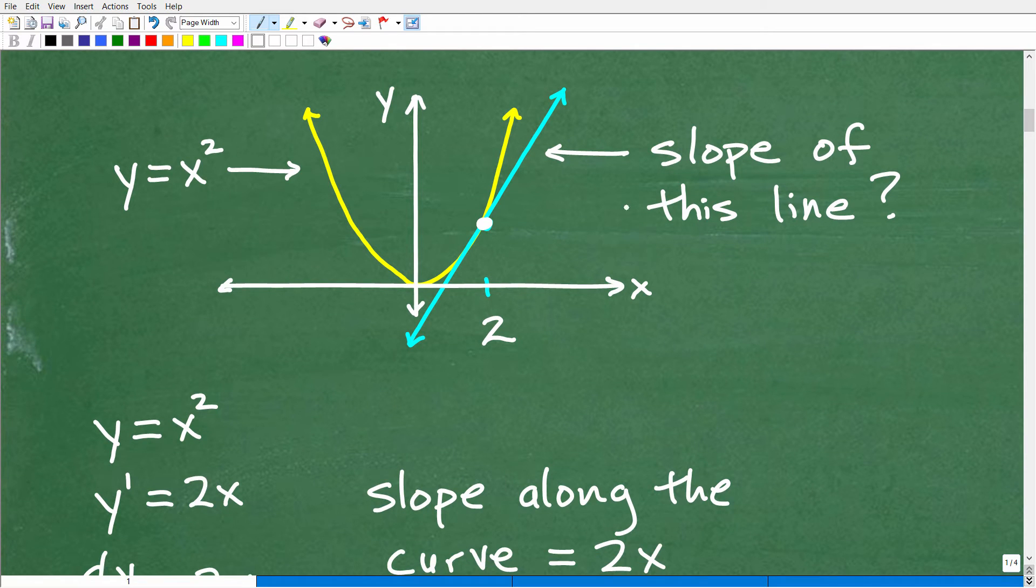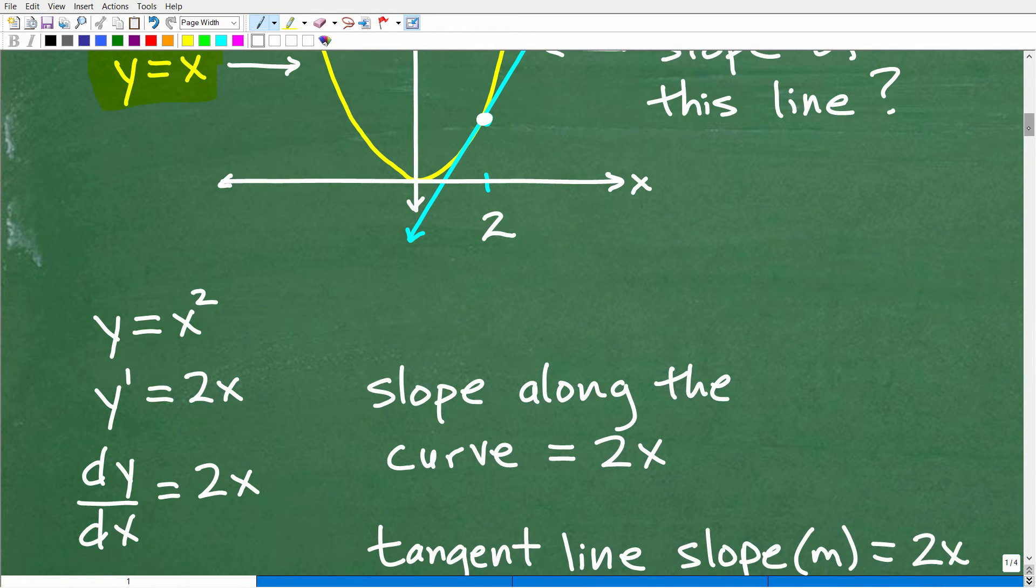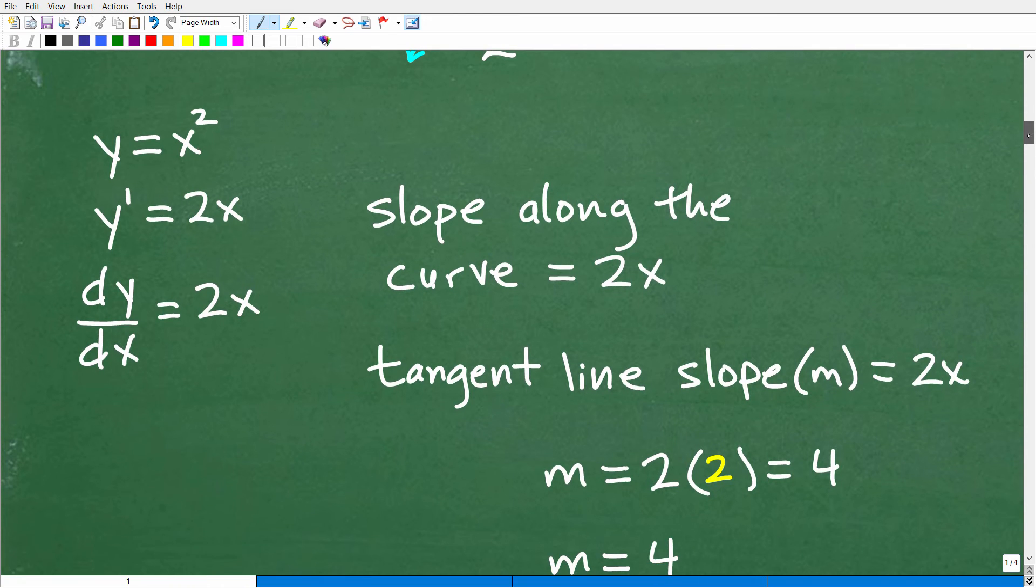So what we have to do specifically is find the first derivative of this equation or this function. So that's the mechanics of what we're gonna be doing. And you're gonna see how easy that is right now. So let's get to it. So here is our problem. We want to find the slope of this line. So here is our function or equation of this parabola, y equals x squared.